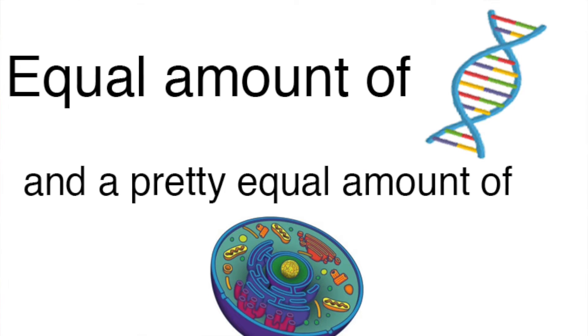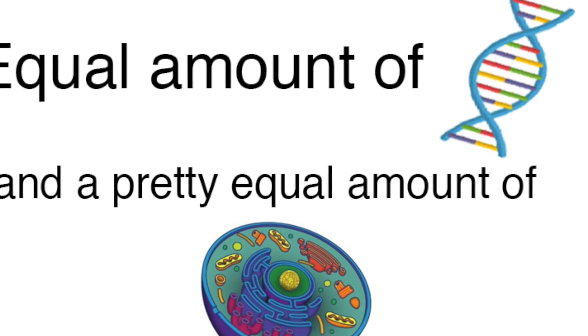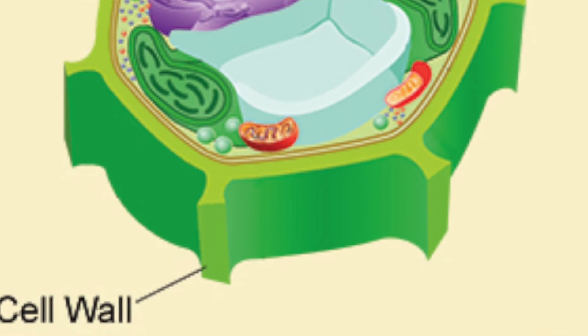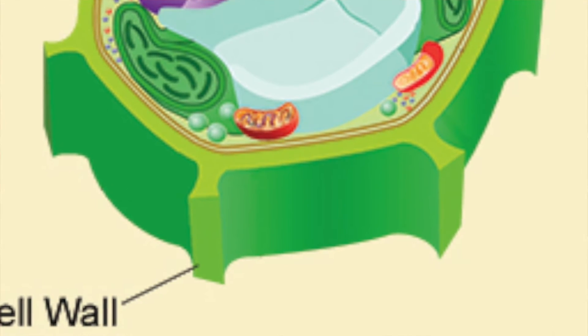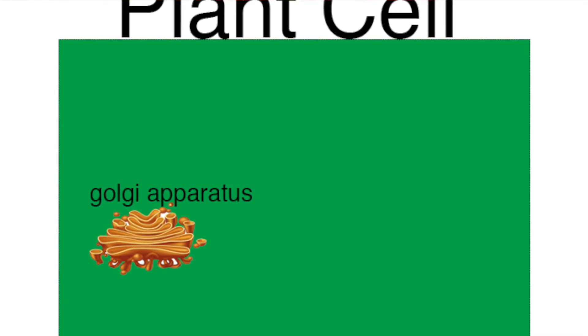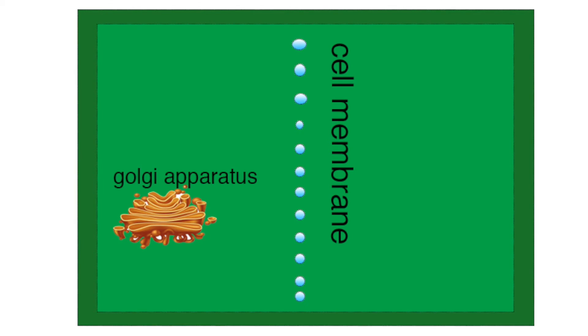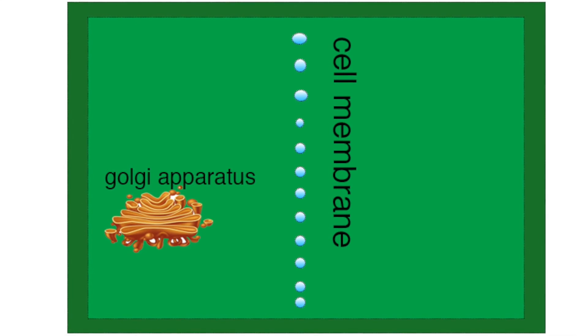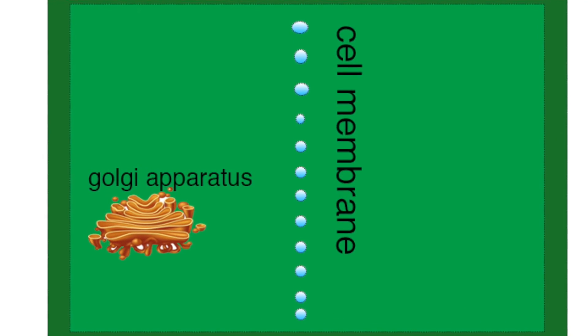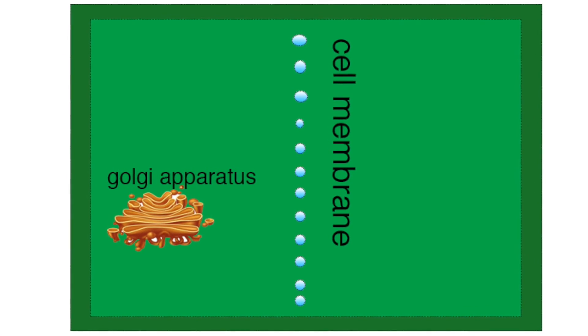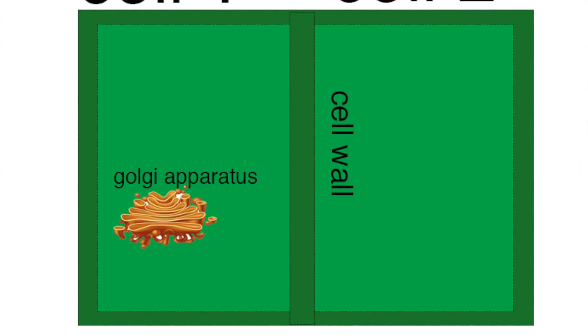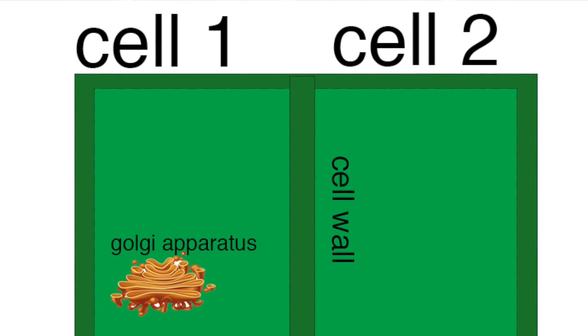Once the contractile ring pinches together, the cell splits into two. Each new cell has an equal amount of chromosomes and a pretty even amount of the cytoplasmic content of the cell. However, plant cells have a cell wall that doesn't bend, so they need a completely different process. In plant cell cytokinesis, an organelle called the Golgi apparatus releases little membrane sacs called vesicles. Because the vesicles are made of the same stuff as the plant cell's cell membrane, the vesicles combine with the cell membrane and form two separate cells. Once the cell membrane is formed, the vesicles packed with cell wall ingredients form a new cell wall, and each new plant cell separates.